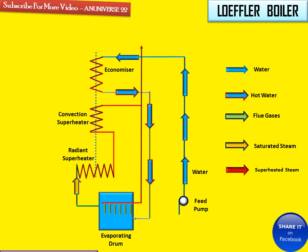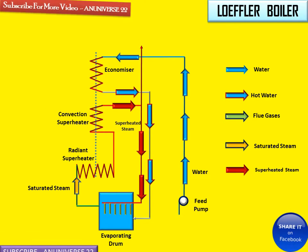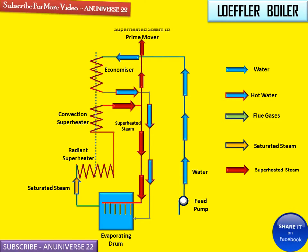From the evaporating drum, saturated steam is supplied to the radiant superheater, and from the radiant superheater it is supplied to the convection superheater, where the temperature of the steam is increased and it becomes superheated steam. One third of this superheated steam passes through to the prime mover, and the remaining two thirds is supplied to the evaporating drum in order to evaporate the feed water.